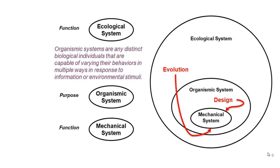Many ecosystems and mechanical systems exist whether or not engineers are involved. The first purposeful kind of system industrial and systems engineers are interested in is organismic systems — people, animals, plants, living matter — which tend to have purpose. We talk about people's purposes, personal missions, and value systems, not just their function. Any distinct biological individual capable of varying behavior in response to stimuli is an organismic system, typically existing within an ecological system and made up of mechanical systems.